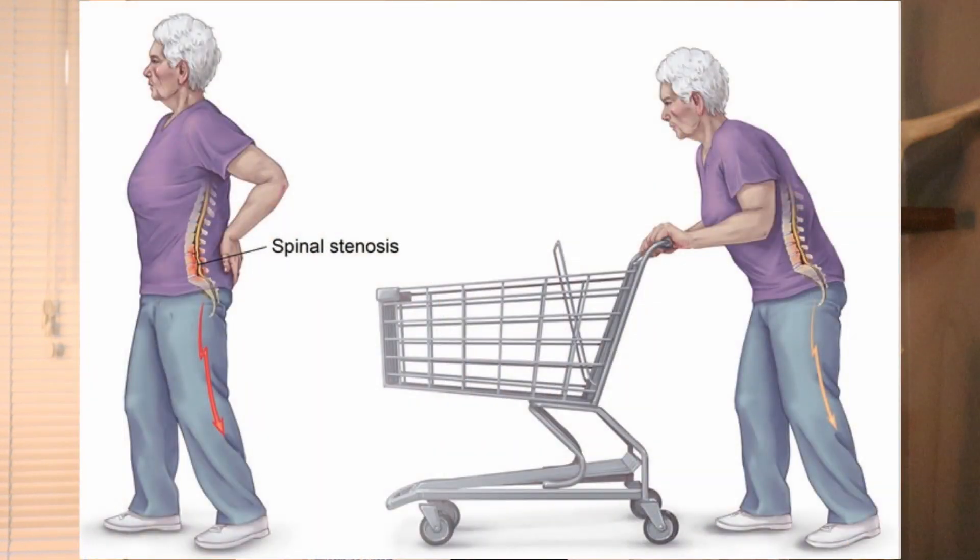There's something called the shopping cart sign: patients with lumbar spinal stenosis when they go shopping like to use a cart, leaning forward on it — again, that forward flexion helps open up the spine. Someone may be able to walk the entire grocery store with a cart but only two or three aisles without one. Other symptoms include numbness and cramping in the legs, and when stenosis is significant, patients can get weakness in the ankle muscles, calf muscles, or thigh muscles.